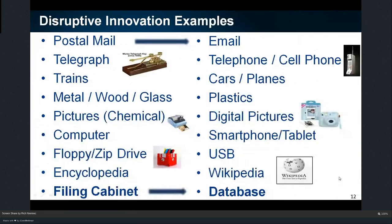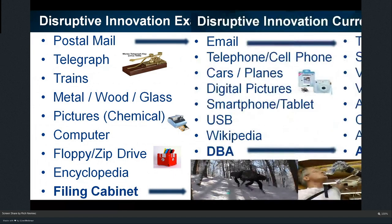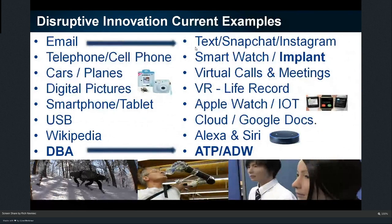We're at a time of high disruption. We moved from telegraph to telephone, then to cell phone in just decades. Floppy drive went to zip drive, then USB. Encyclopedia became Wikipedia, filing cabinet became a database. Now it's going faster — email goes to text, Snapchat, Instagram. You're going to have a smart watch; some people will have an implant for a telephone. Wikipedia has become Alexa and Siri. A USB is now Google Docs on the cloud. The DBA is being automated with autonomous database — another form of robot.